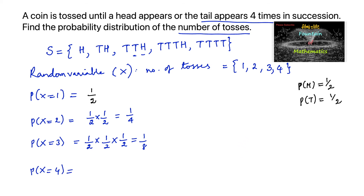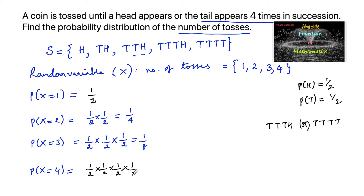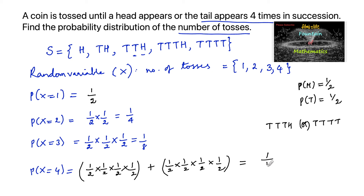For X = 4, four tosses have two possibilities: tail, tail, tail, head (TTTH) or tail, tail, tail, tail (TTTT). Using the addition principle: P(TTTH) = 1/2 × 1/2 × 1/2 × 1/2 = 1/16, and P(TTTT) = 1/2 × 1/2 × 1/2 × 1/2 = 1/16. So P(X=4) = 1/16 + 1/16 = 2/16 = 1/8.